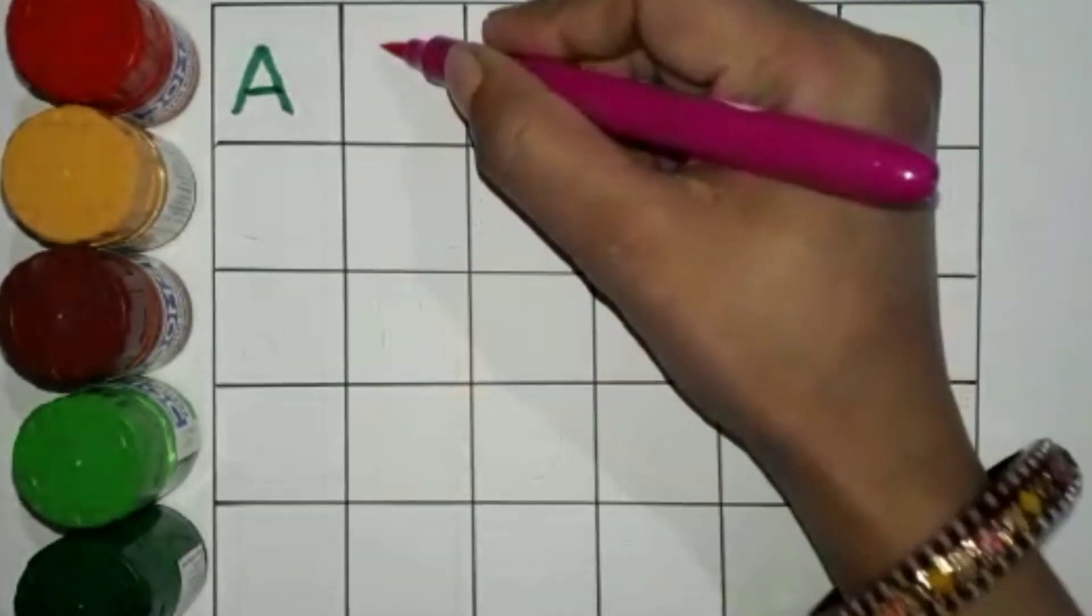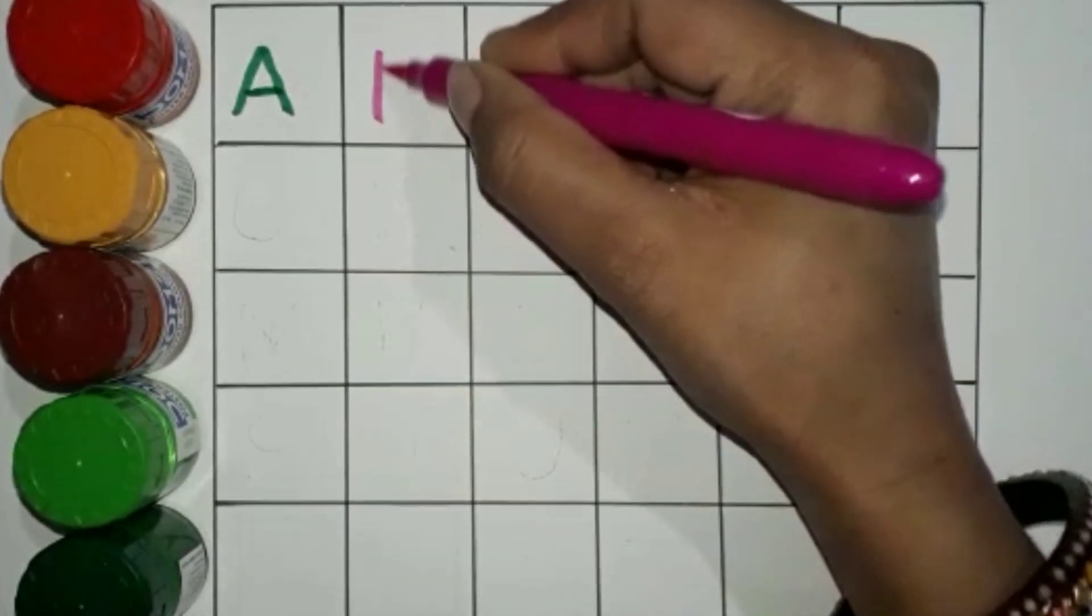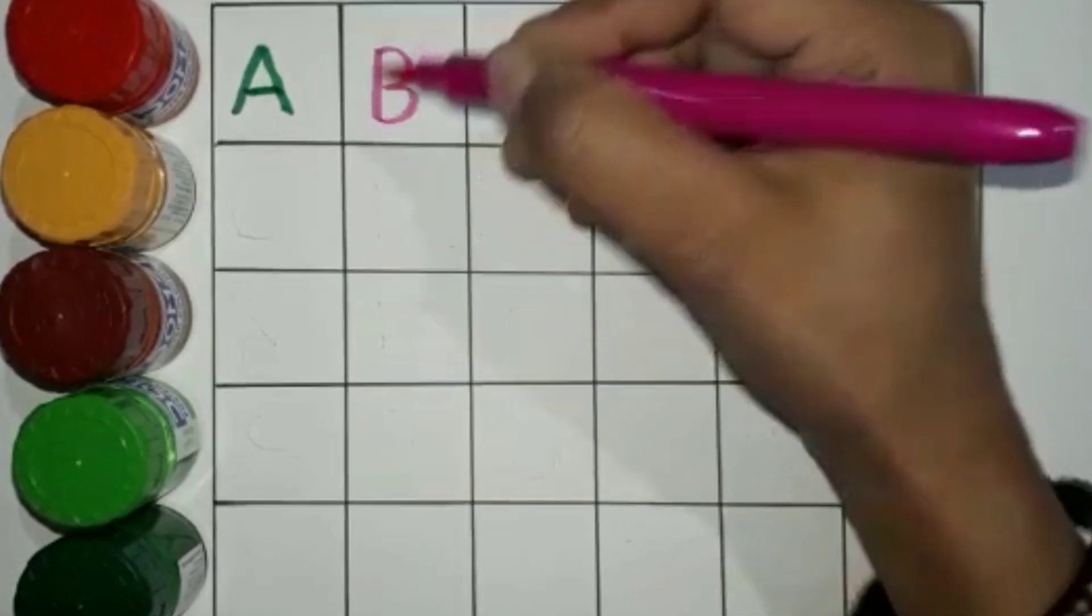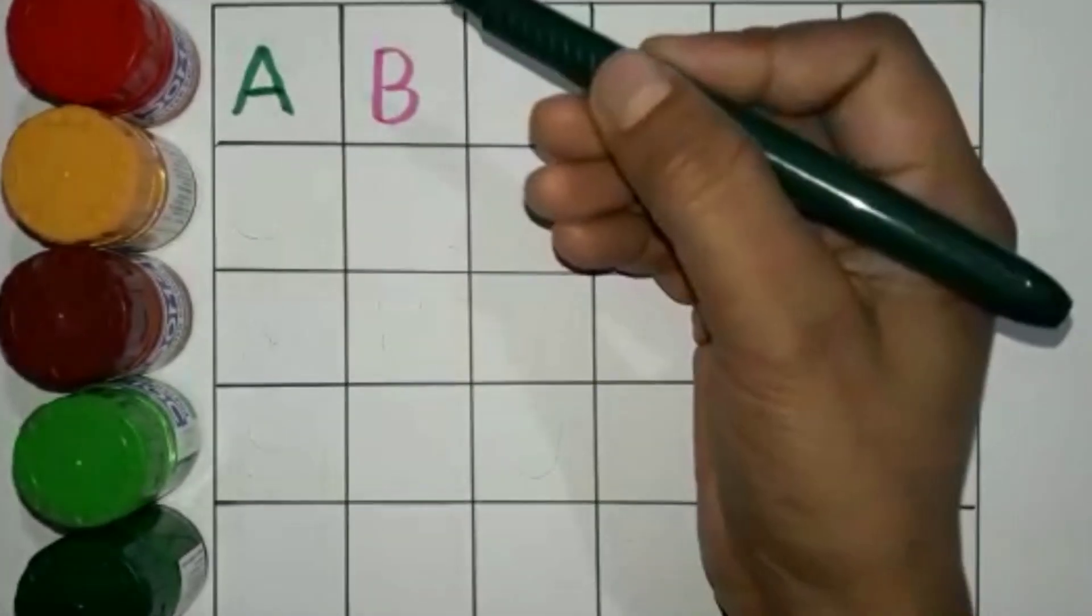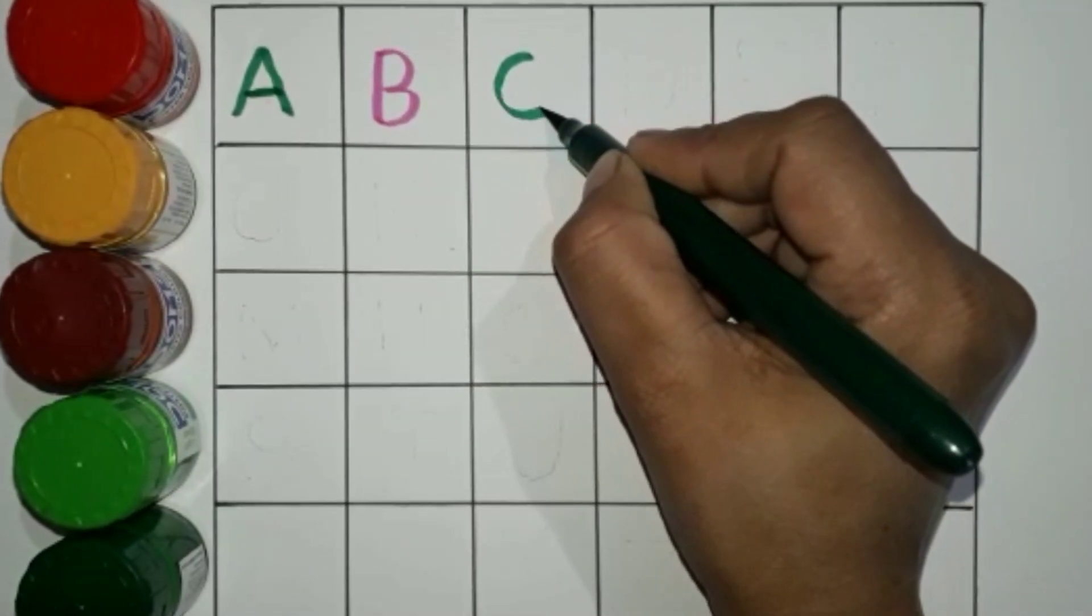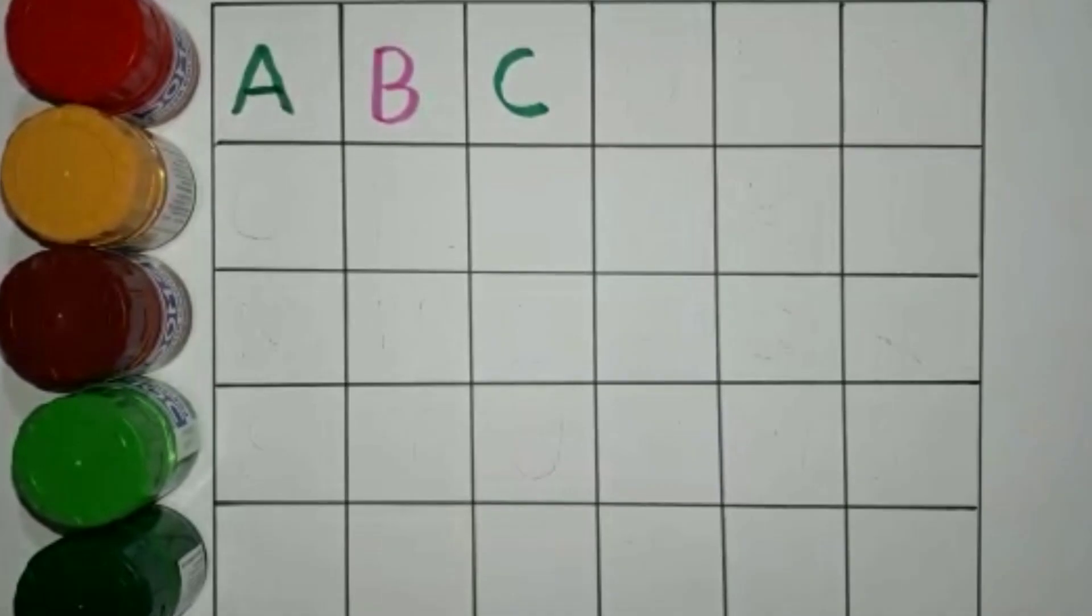Pink color. B. B for Ball. Green color. C. C for Cat.